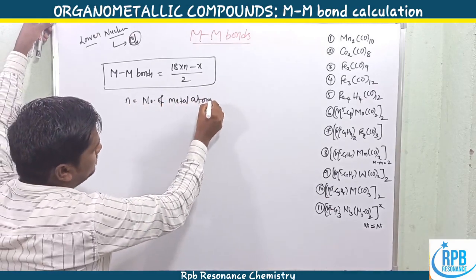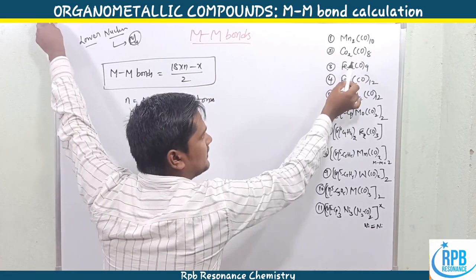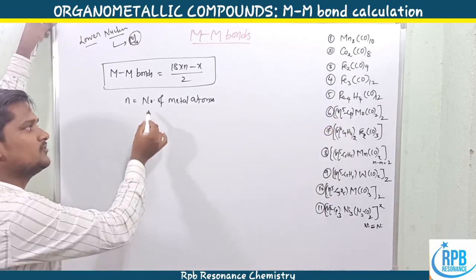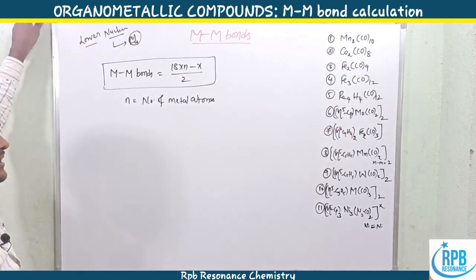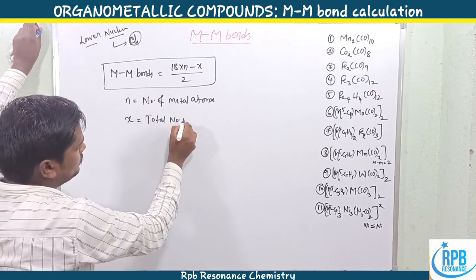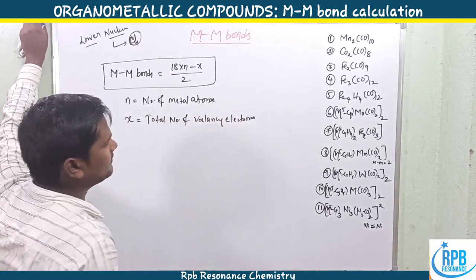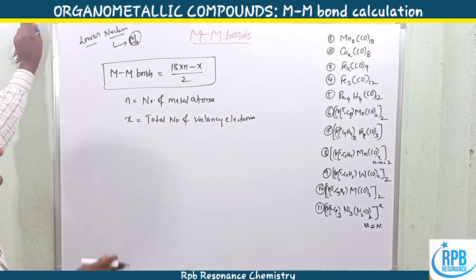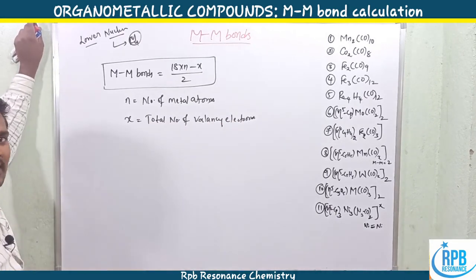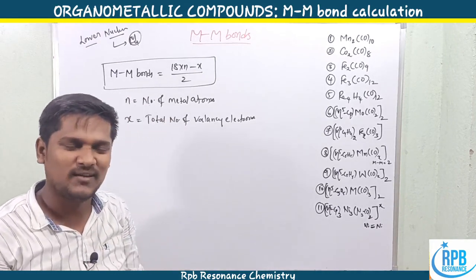In this formula, n is equal to the number of metal atoms — for example, n=1, 2, 3, or 4 based on the compound. x is equal to the total number of valency electrons. So: metal-metal bonds = (18n − x) / 2. I think this is clear.